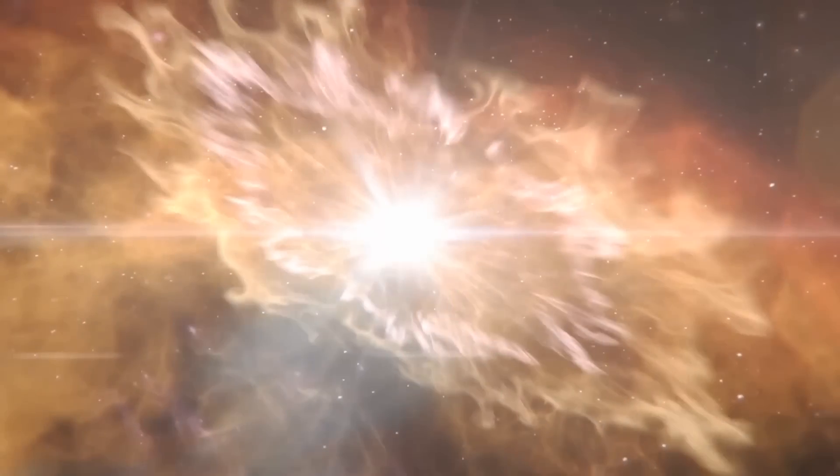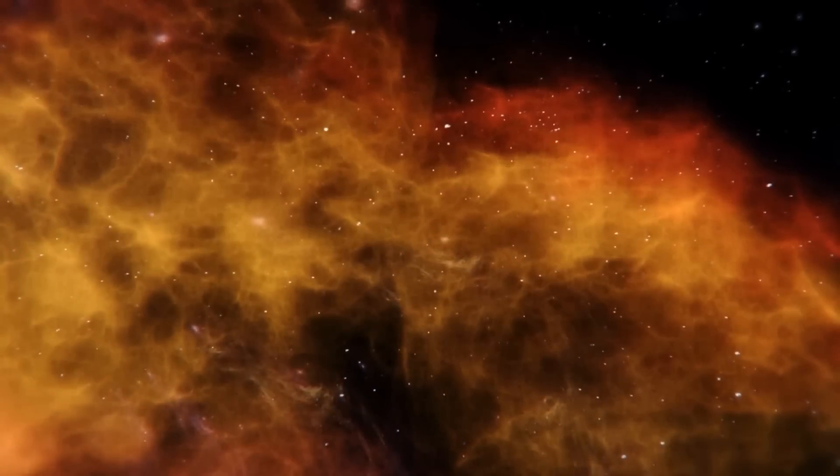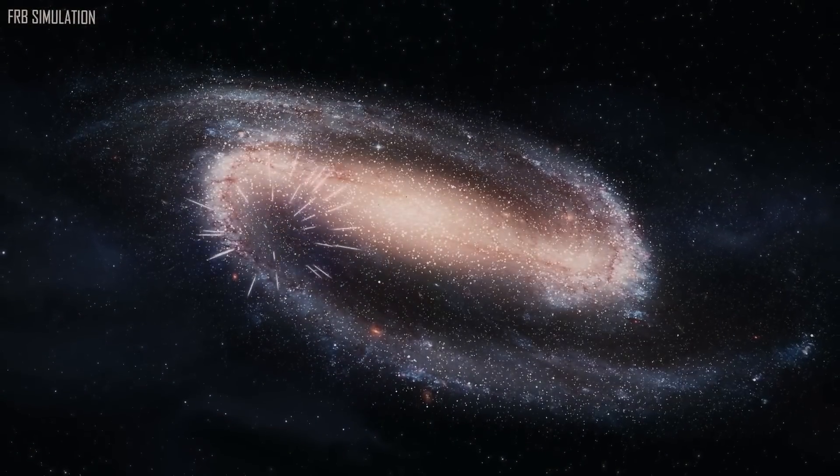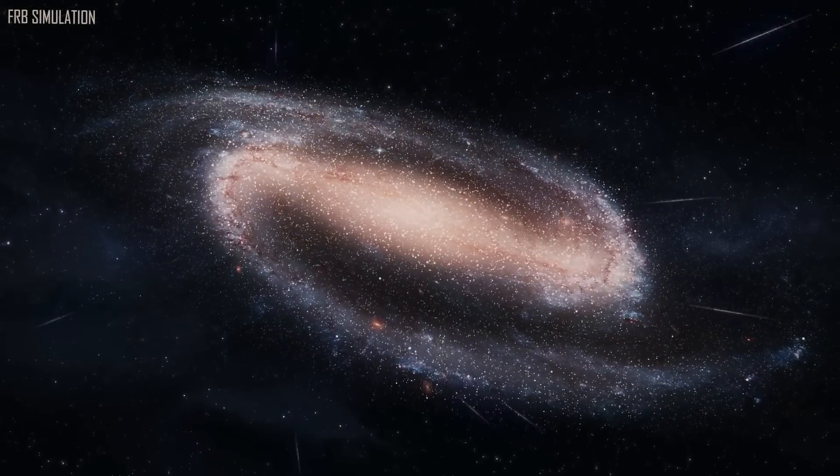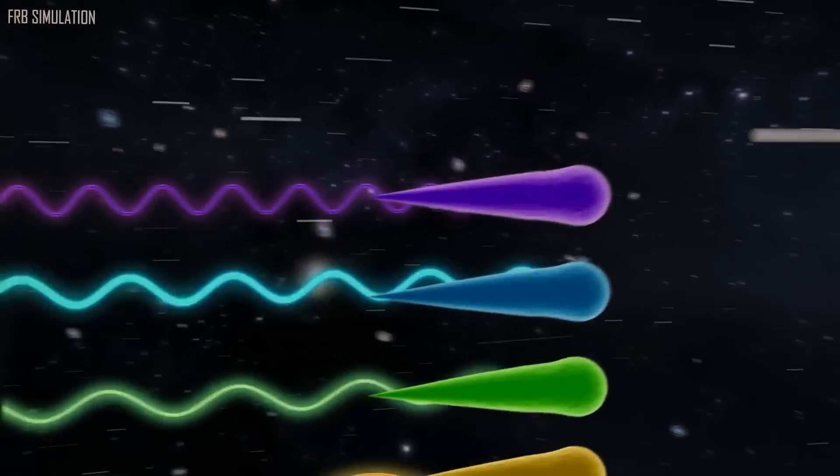Then, three years ago, a Milky Way magnetar created a radio burst that looked like an FRB. Even though the explosion was a little weaker than the extraordinarily long bursts coming from halfway across the universe, experts were confident they were on the correct track.